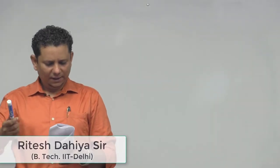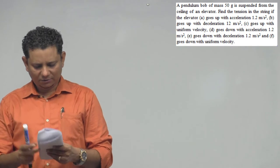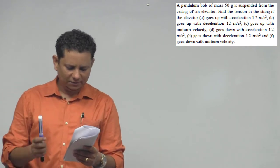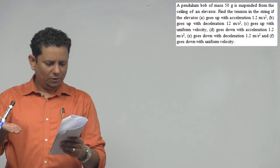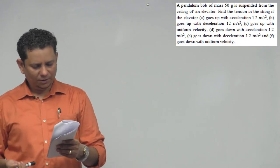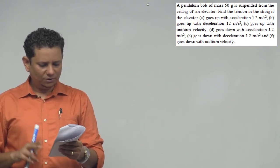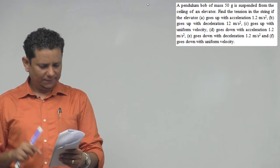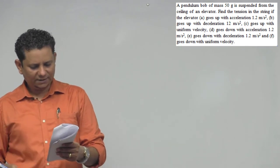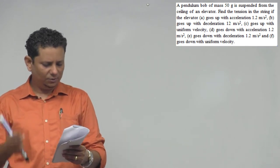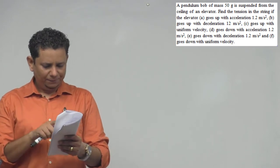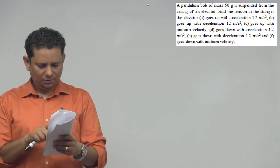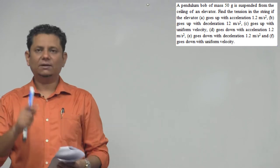A pendulum bob of mass 50 grams is suspended from the ceiling of an elevator. Find the tension in the string if the elevator: goes up with acceleration 1.2, goes up with deceleration 1.2, goes up with uniform velocity, goes down with acceleration 1.2, goes down with deceleration 1.2, and goes down with uniform velocity. So here we have actually 1, 2, 3, 4, 5, 6 questions.